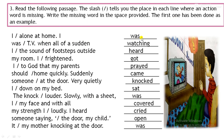With 'I', we use only 'was'. So, 'I was alone at home. I was watching TV when all of a sudden I heard the sound of footsteps outside.' Somebody was there. Outside my room, he heard the noise.